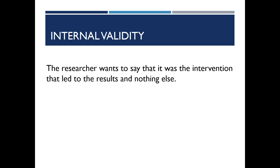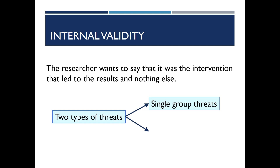In essence, the researcher wants to say that it was the intervention that led to the results and nothing else. These threats are threats against the researcher's ability to make such a claim. There are two general types of threats: single group threats and multiple group threats. Single group threats happen when there's only one group of participants, and multiple group threats happen with two or more groups.